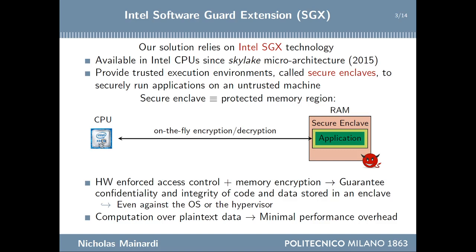A secure enclave is basically a protected memory region that stores the code and data of the application in encrypted form, with a key known only to the CPU. This guarantees the confidentiality and integrity of such code and data, even against the operating system or the hypervisor of the untrusted machine. The content of an enclave is decrypted on the fly when moved inside the CPU, so the computation happens over plain text data with minimal performance overhead.